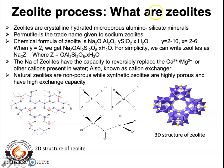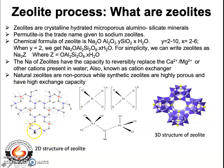Zeolites are minerals containing three principal elements: the alumina, the Al³⁺ cations, the Si⁴⁺ cations, and the oxygen anions. This is basically a 2D structure of zeolite, and you can see that it has a cage-like structure.